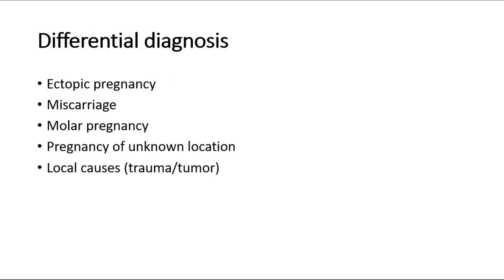The possible causes of early pregnancy bleeding are ectopic pregnancy, miscarriage, molar pregnancy, pregnancy of unknown location, or local causes such as trauma or tumor.